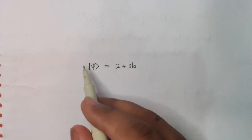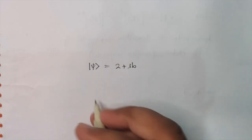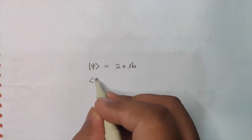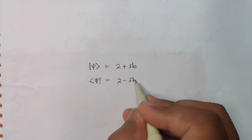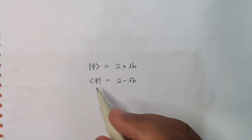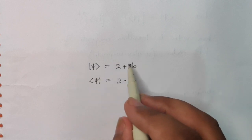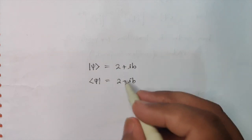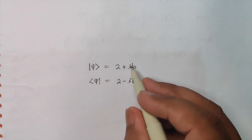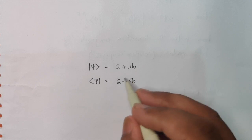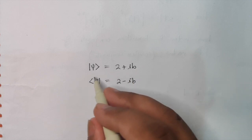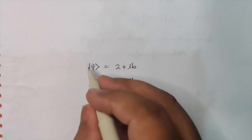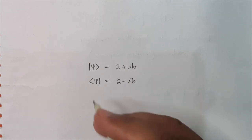Let's try to understand. So let's say this ket vector is described like this. So the corresponding bra vector is going to express 2 minus i times B. Basically what you have to do is take the conjugate. You know that if you have some complex number and you take the conjugate, you just change the sign of the imaginary part. So you change the sign of the i part and you get your corresponding bra vector.